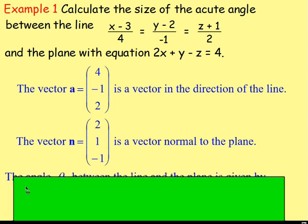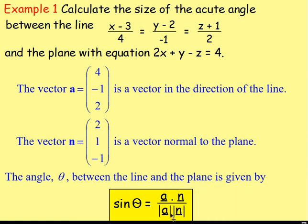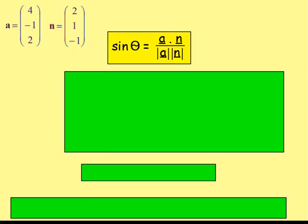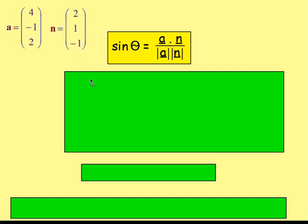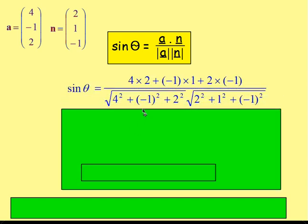To work out the size of the angle between the line and the plane, remember we're working out the angle between the vectors and correcting it by 90 degrees. So instead of cos theta equals, we've got sin theta equals. We're going to use sin theta = A dot N over magnitude of A times magnitude of N. We've got vector A and vector N, and putting them into the formula: sin theta equals A dot N — multiply the x values, the y values, and the z values and add them together.